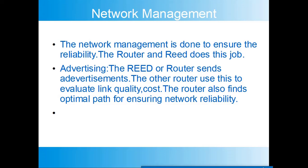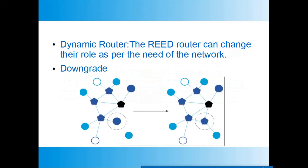Network management is done to ensure the reliability of the network — the routers and REED devices handle this. It is done through advertising: a REED or router sends advertisements, and other routers use this to evaluate link quality or cost. The router also finds the optimal path for ensuring network reliability. Dynamic routers like REEDs play a very important role — they can change their role as per the need of the network.